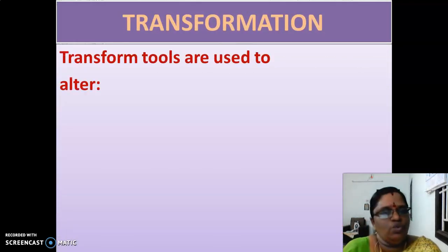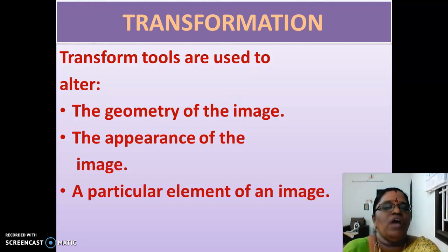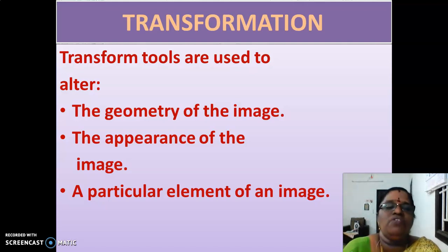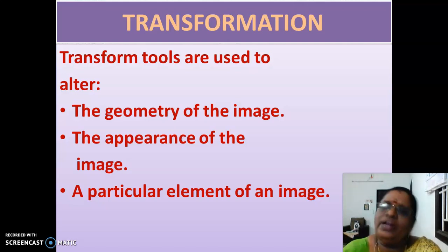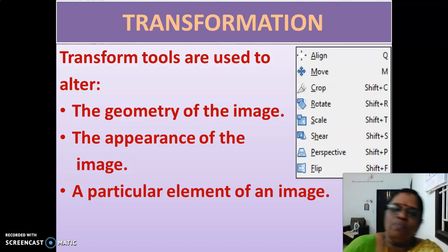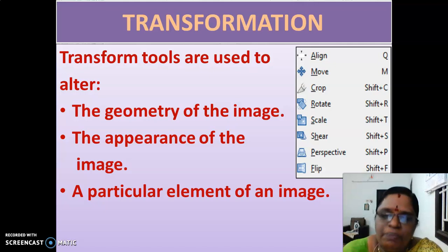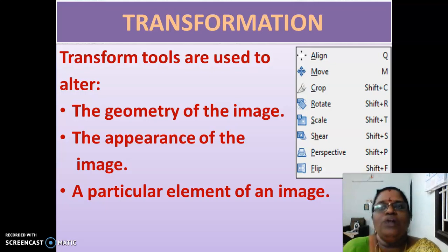Transform tools are used to alter the geometry of the image, the appearance of the image, and a particular element of an image. These are all the transformation tools available in GIMP: align, move, crop, rotate, scale, shear, perspective, and flip. There are 8 transformation tools available in the GIMP interface.